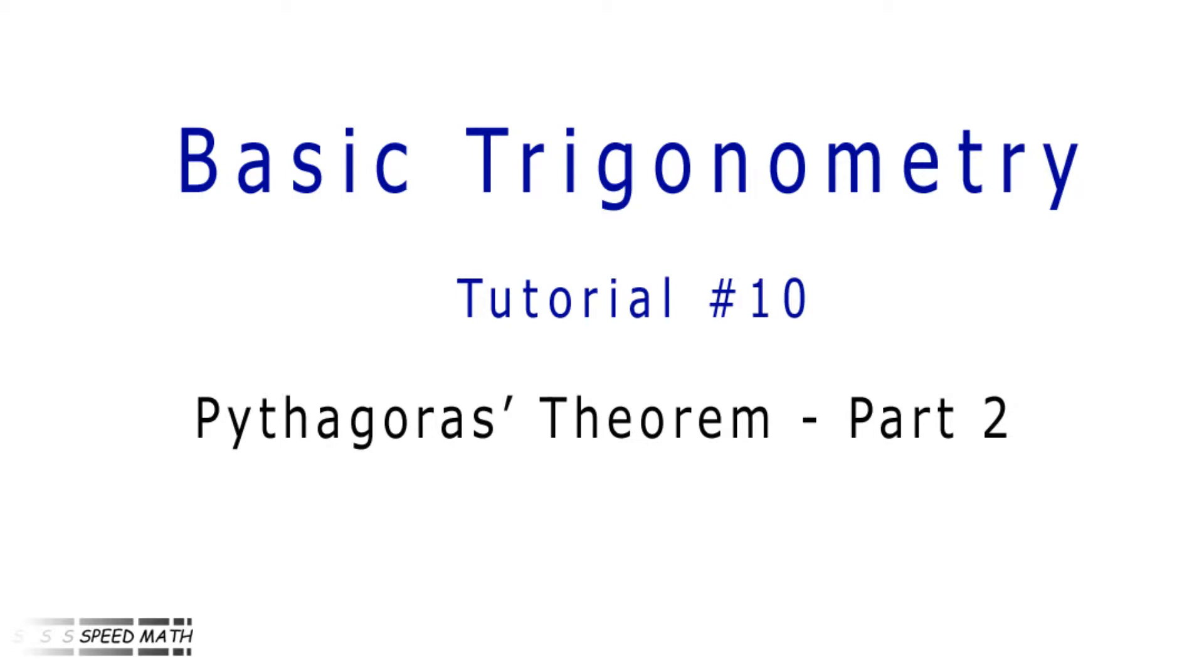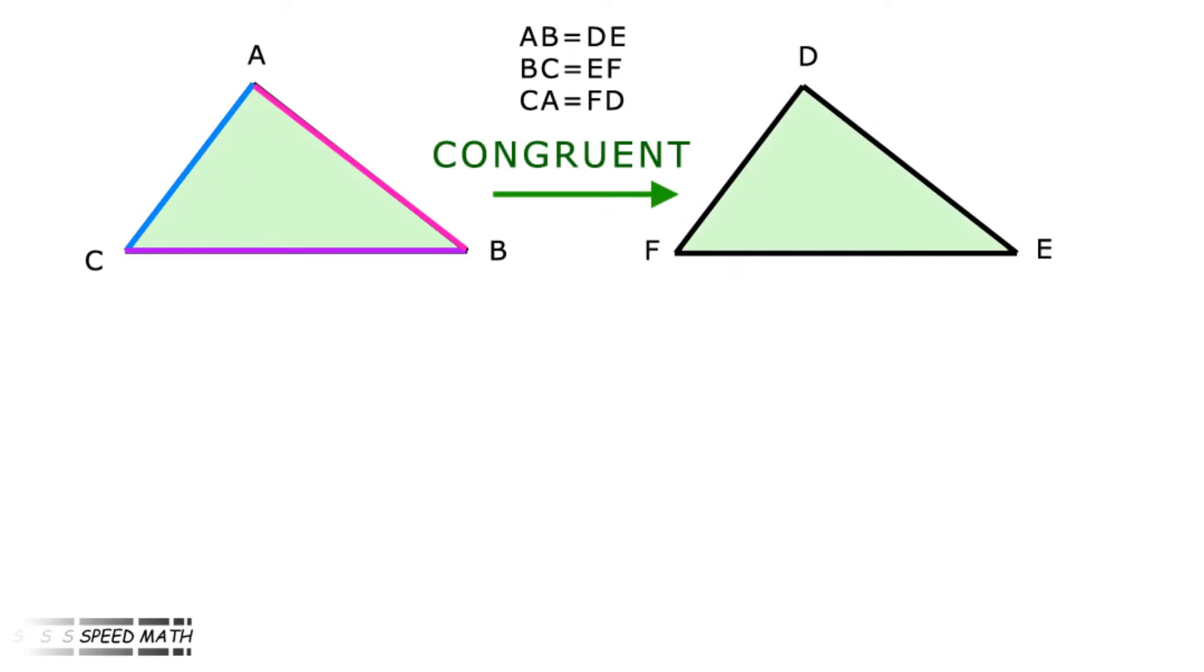When triangles are similar, they have the same shape but have different sizes. Congruent triangles are identical. They are the same size. Look at this graphic and you'll see what I mean. When two triangles are congruent, they are exactly the same in shape and dimension. So side AB equals side DE, BC is equal to EF, and CA equals FD. And the ratio of corresponding sides is always 1.